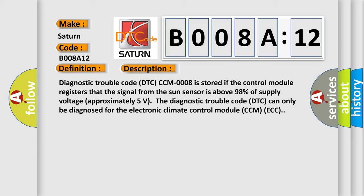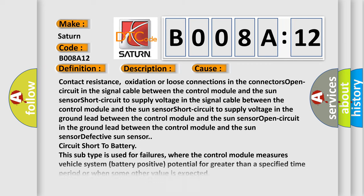This diagnostic error occurs most often in these cases: contact resistance, oxidation or loose connections in the connectors, open circuit in the signal cable between the control module and the sun sensor, short circuit to supply voltage in the signal cable between the control module and the sun sensor, short circuit to supply voltage in the ground lead between the control module and the sun sensor.